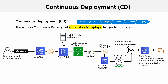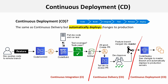It looks very similar to the last one, but we have a little bit on the end here. We know continuous integration, we know continuous delivery, and now we're looking at continuous deployment. The last thing we saw in continuous delivery was the feature branch being merged into master, so all the code was ready to be deployed. This is where continuous deployment comes in.